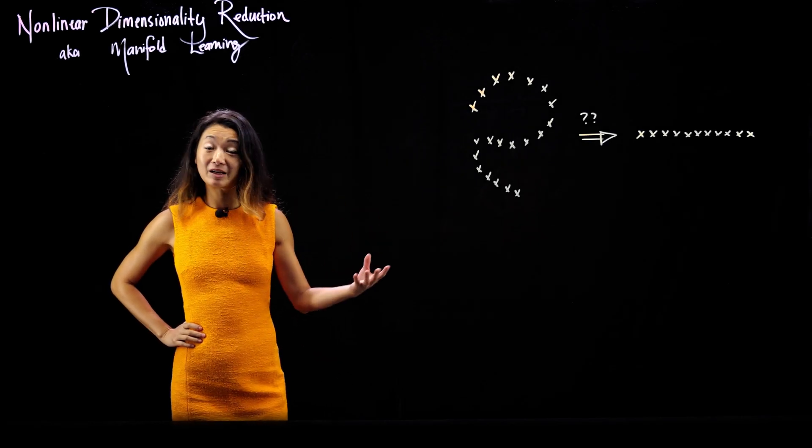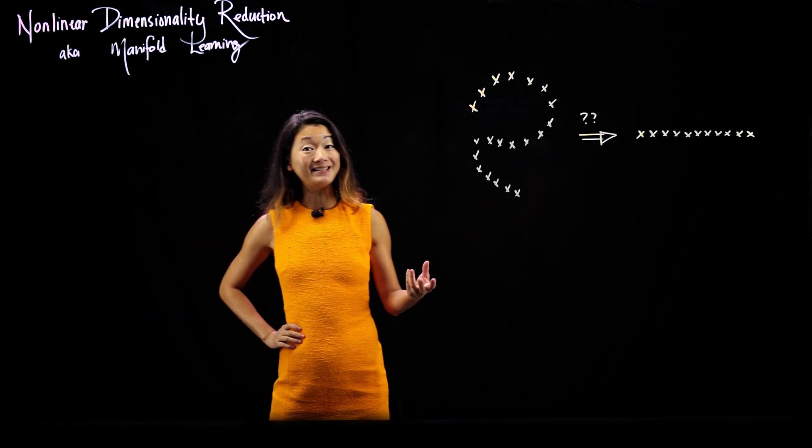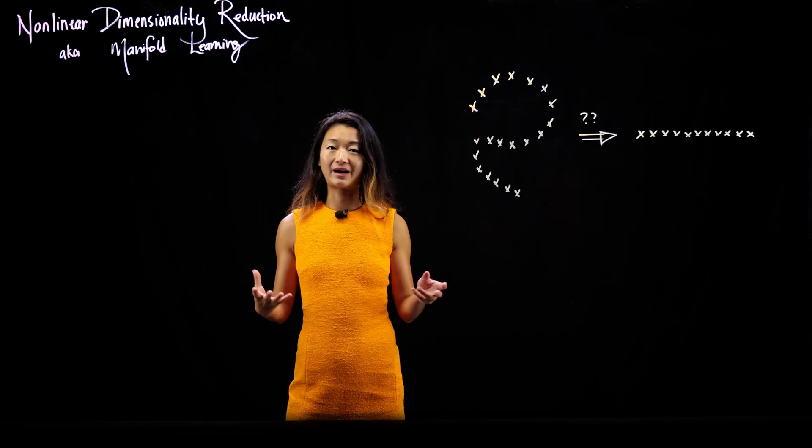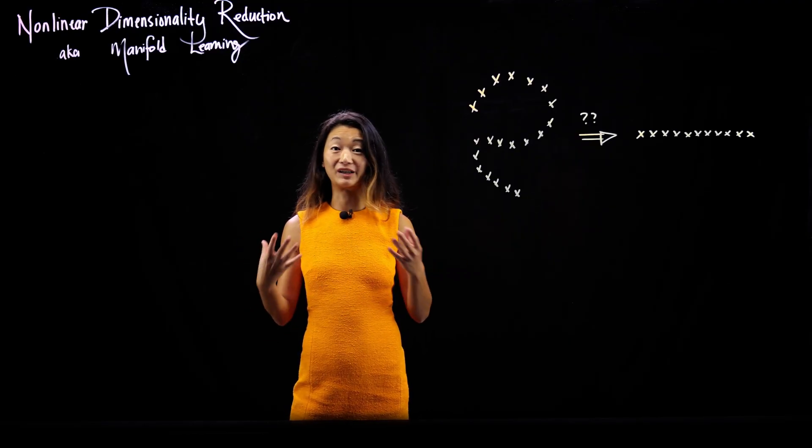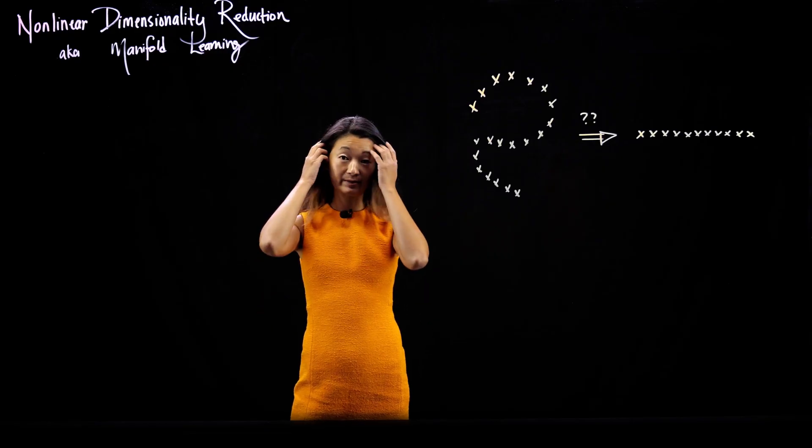So in the last lecture, we ended up talking about this notion of Euclidean distances as a notion of similarity. How do we define when something is close to another one? And this works perfectly fine as long as everything is very linear and we're really solving for linear subspaces.